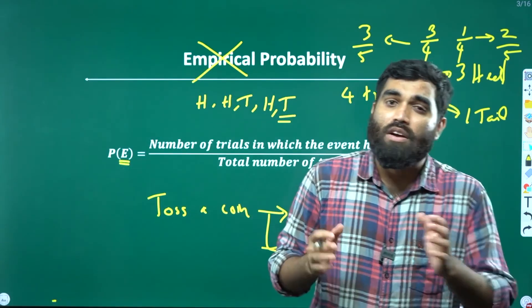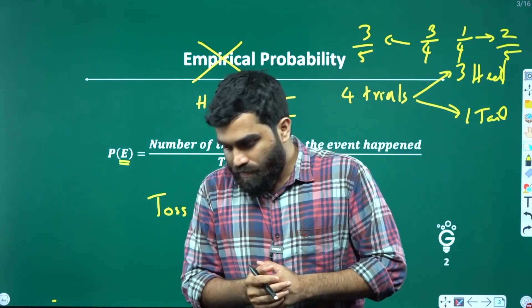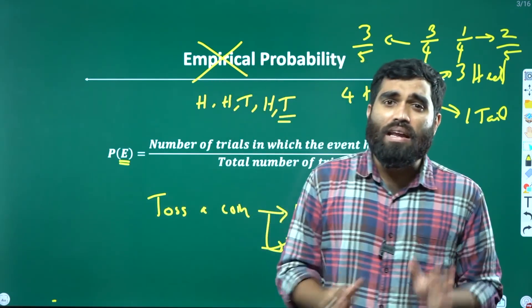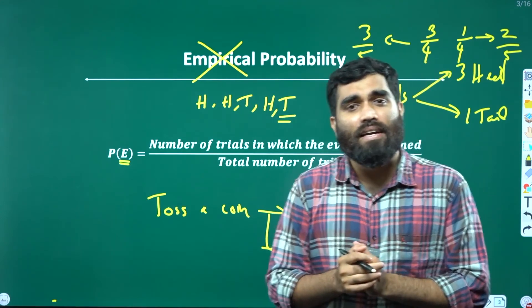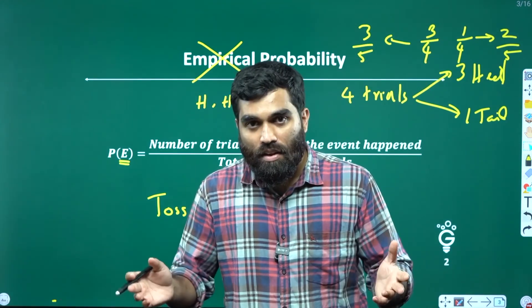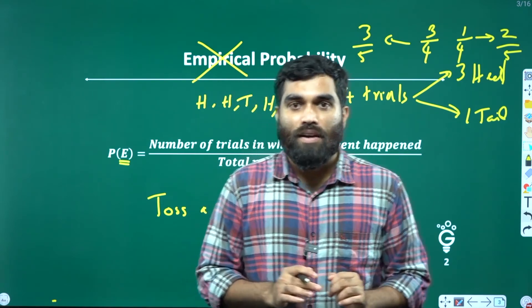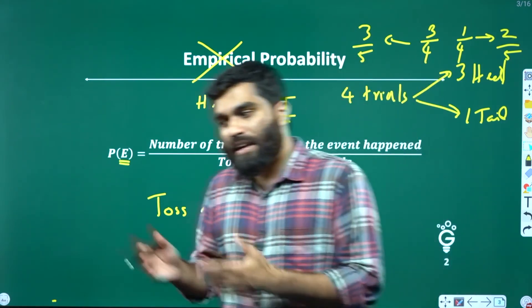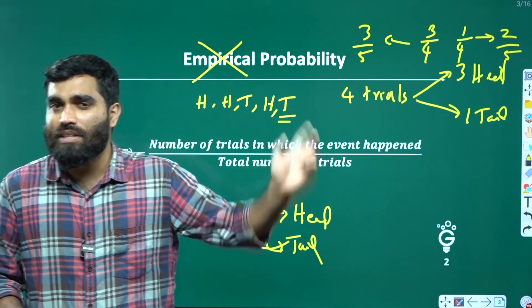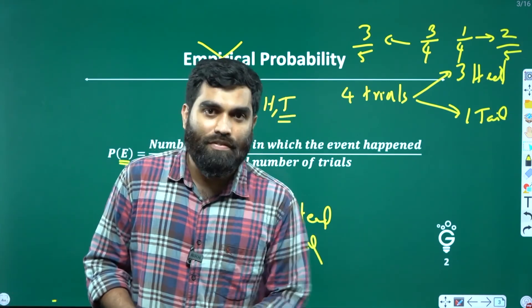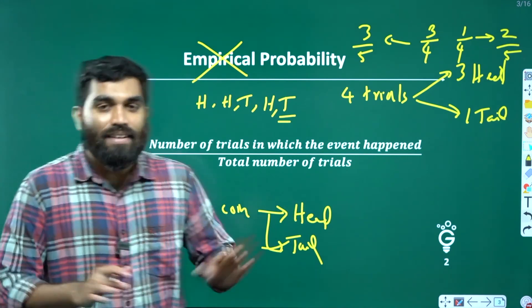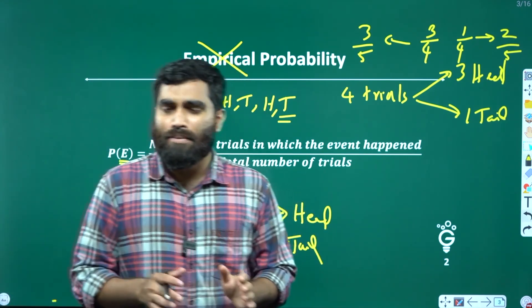Theoretical probability, or classical probability. A very straightforward example: while you toss a coin, what is the probability of head? Theoretical probability is 1 by 2 — no doubt. Because there are two possible outcomes, purely based on our logic. Head probability is half, tail probability is half. This is classical probability or theoretical probability.